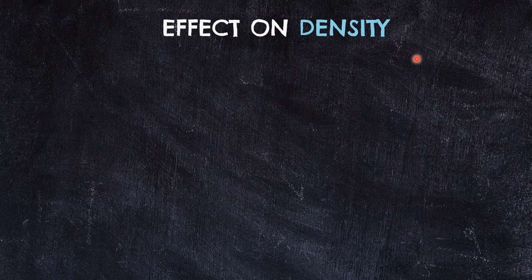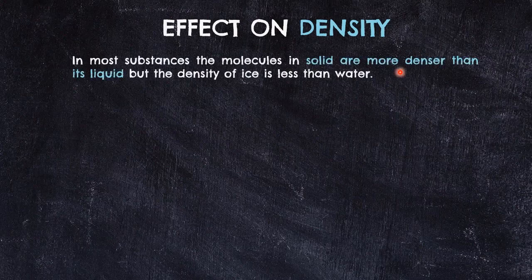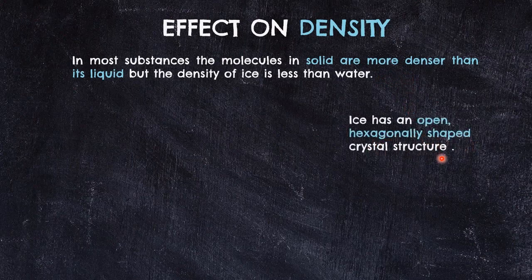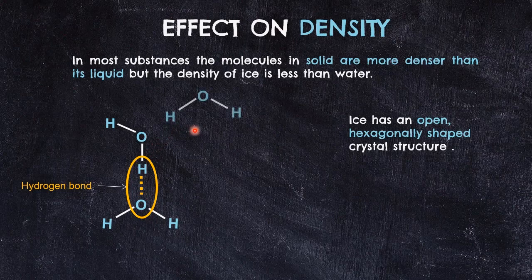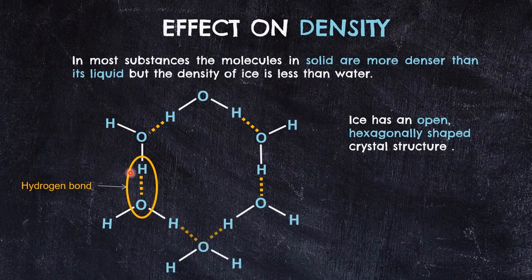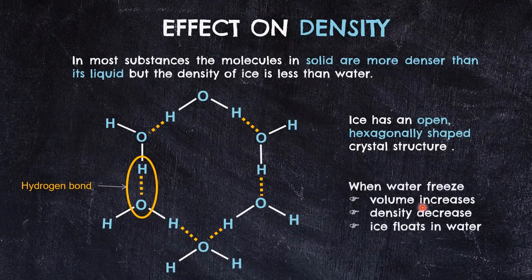Density is about the degree of compactness of a substance. In most cases, solid should be denser than liquid. But for water, solid ice has lower density than liquid water. This is due to the open hexagonal crystal structure in ice, formed by hydrogen bonds between water molecules. As more water molecules are added, more hydrogen bonds form. When liquid water freezes, its volume increases due to this open hexagonal structure, and the density decreases. That is why solid ice floats in water.